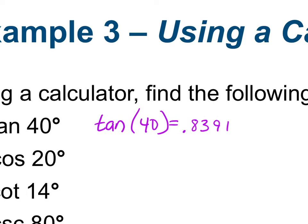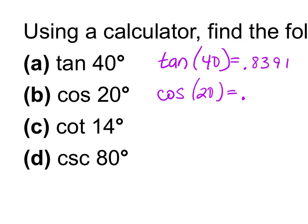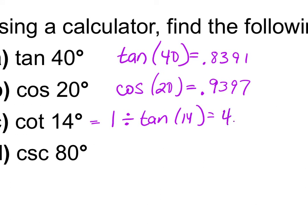The next one says cotangent. We don't have a cotangent button, but cotangent is the reciprocal of tangent. So in your calculator, you hit 1 divided by tangent of 14. What do we get? 4.0108.